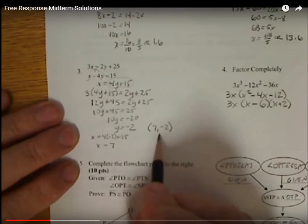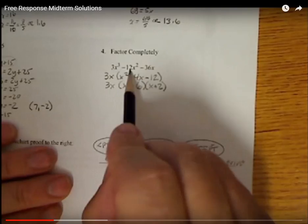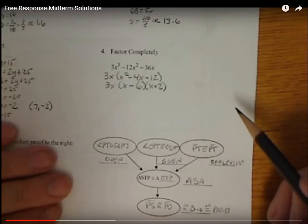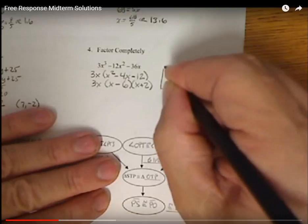For our factoring, your first step is to see what's in common. I have 3 will go into all those terms. x goes into all of them. So I factor out the 3x. That leaves me with x squared minus 6x minus 4x minus 12. And then if you need to use a box method, we have a couple different ways you can actually work through it.